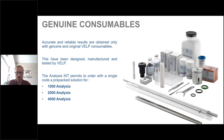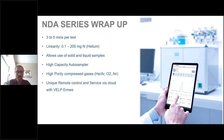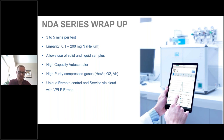Regarding genuine consumables: these have been designed and manufactured by VELP Scientifico and are required for accurate and reliable results. Analysis kits can be ordered in quantities of 1,000, 2,000, or 4,000 analyses at a time. To summarize the NDA series: analysis takes three to five minutes per sample; the instrument handles solid, liquid, and semi-solid samples interchangeably; high-capacity autosampler; high-purity carrier gases (helium or argon) plus oxygen and compressed air are required; and remote control and service is available via the VELP ERMES cloud platform.